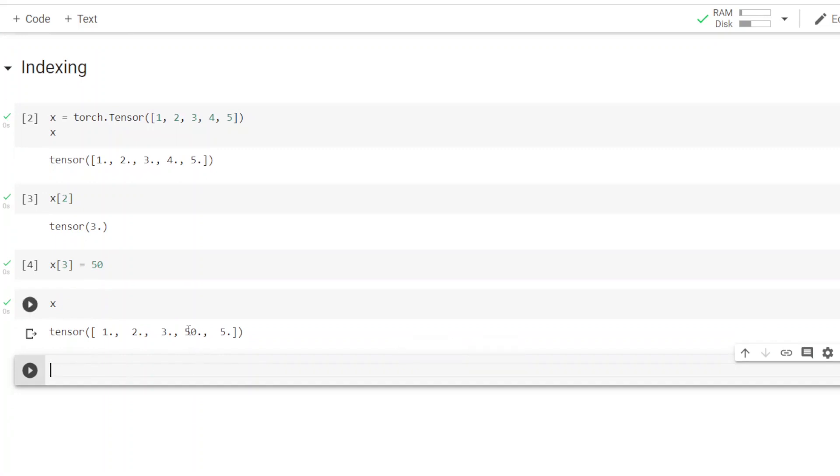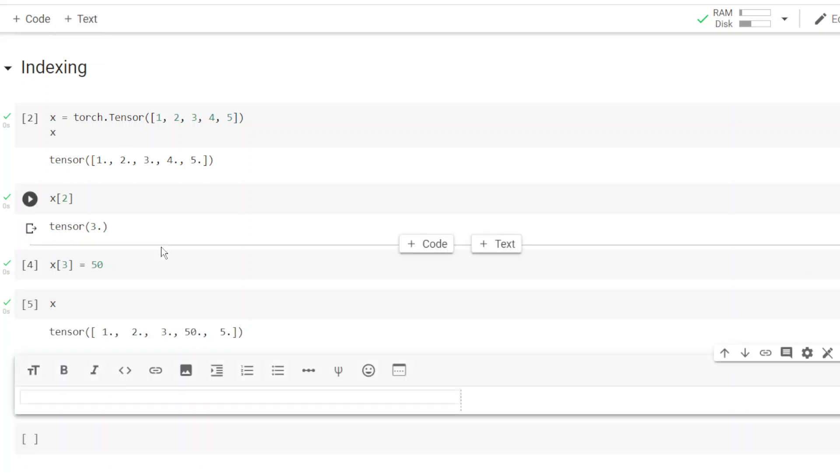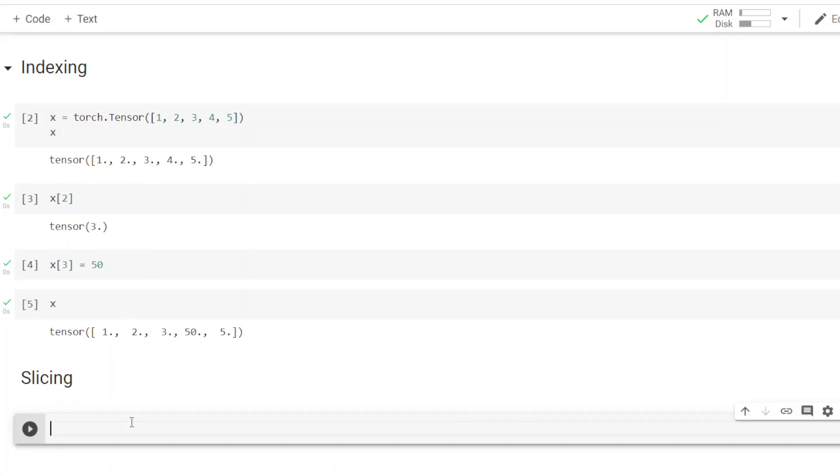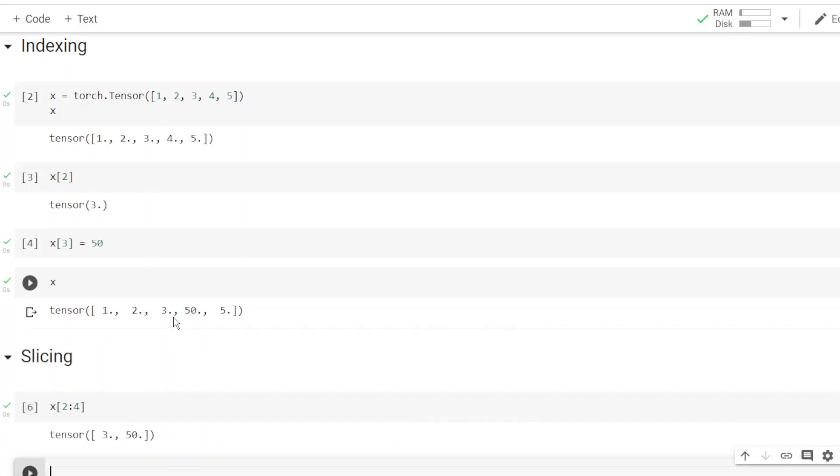So you see that this value is modified. Now we will use slicing. What we will do, we will write x[2:4] and let's see what it prints. It prints 3 and 50, so this is the updated x. Starting index is 2, that is third element 1, 2, 3, and ending index is 3, 4 is not included, so just these two elements.